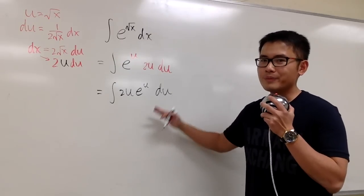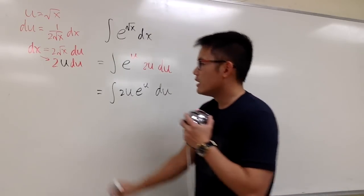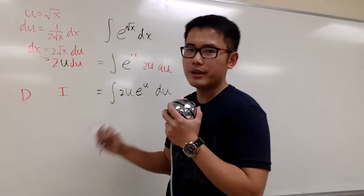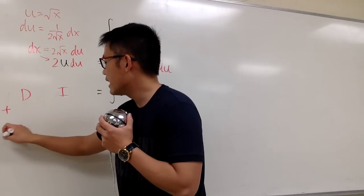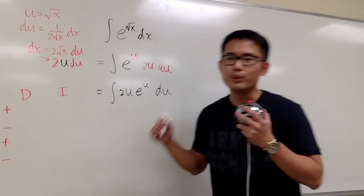And now, in the u world, we can do integration by parts for this problem right here. So I'm going to pick something to be differentiated, and then something else to be integrated. And be sure you have the sign on the side, plus, minus, plus, minus, just put down a few of them to get ready.